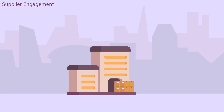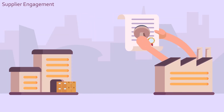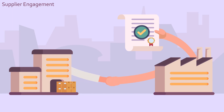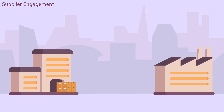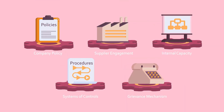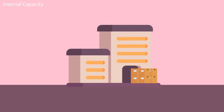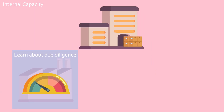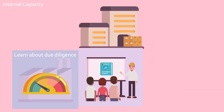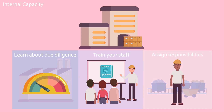Then get your suppliers to agree to the policy in their contracts. Try to help them build their capacity for due diligence — it's more effective and makes your job easier. At the same time, build your own internal capacity: learn about due diligence, train your staff, assign responsibilities, and hold them accountable.